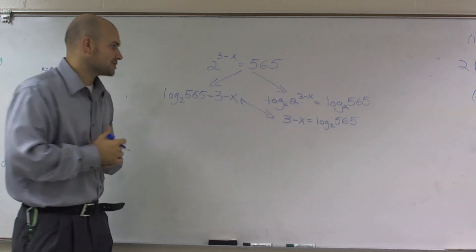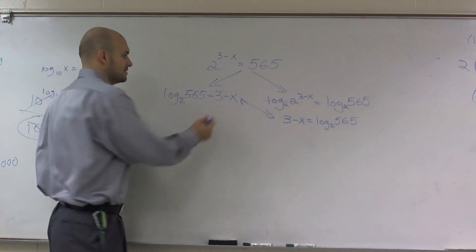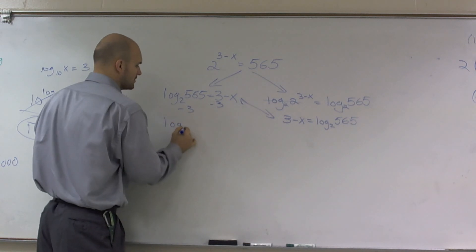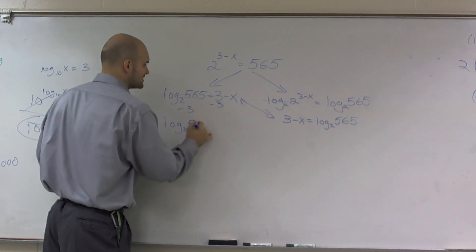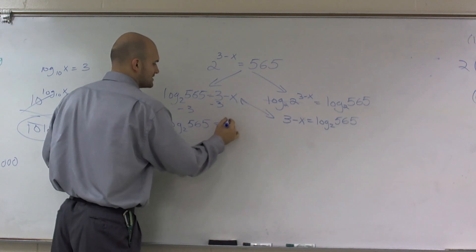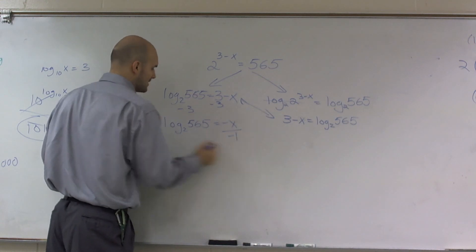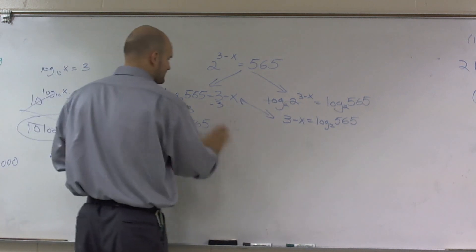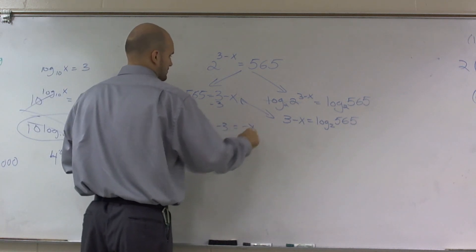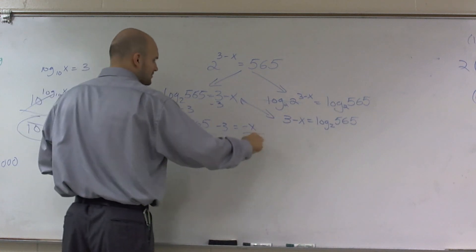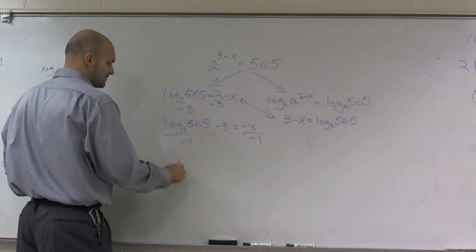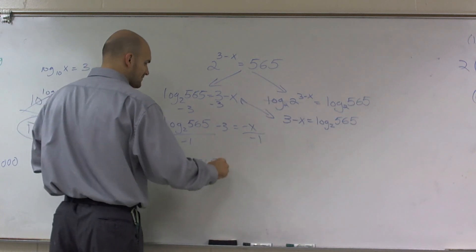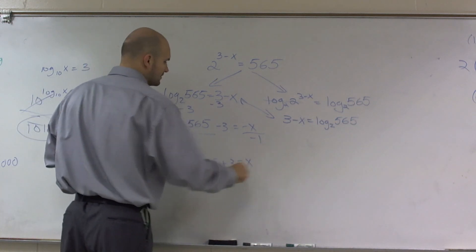Now I just need to solve for x. I subtract 3 from both sides, so I have log base 2 of 565 equals negative x, then I divide by negative 1 on both sides. So x equals negative log base 2 of 565 plus 3.